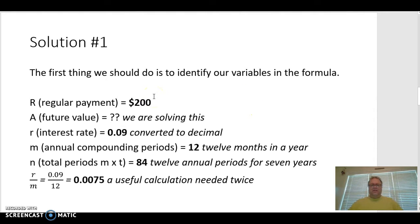All right. So first, we need to identify our variables in the formula. So our regular payments, that's the payment that we're making at the end of each compounding period, which is $200. The future value, well, that's what we're trying to solve. The interest rate, that's 9% converted to a decimal, which is 0.09. The annual compounding periods, well, it's done monthly, and since there's 12 months in a year, that number is going to be 12. The total number of periods, well, remember, that's going to be our M, which is our annual compounding periods, times T, which is the number of years. So that's 7. So 12 times 7 is 84, and then this R over M is going to come up a couple of times in our formula, and we're going to see we're also going to need to use that for our next chapter as well. So it's sometimes a good idea just to go ahead and get this calculation so we can just plug it in wherever we see the R over M.